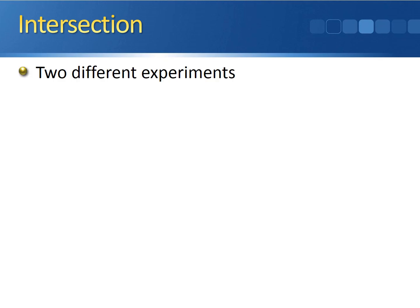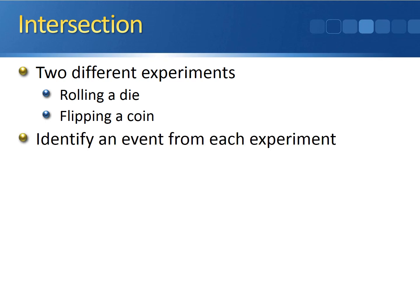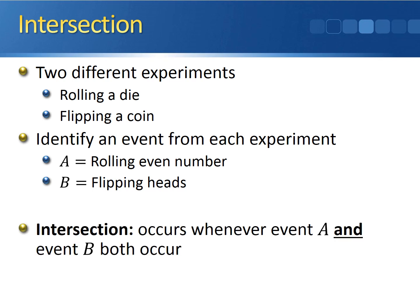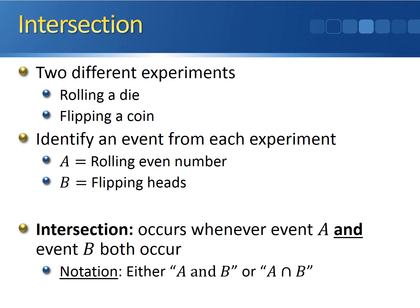Before we can calculate any probabilities, the first thing we have to do is define the intersection. Let's say we're running two different experiments. One experiment is rolling a die, the other is flipping a coin. We can identify an event from each experiment. Let event A be rolling an even number, and event B be flipping heads. The intersection of two events occurs whenever both event A and event B occur at the same time. The notation is either 'A and B' or A with the intersection symbol — an upside-down U — followed by B.